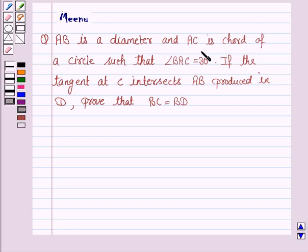It says AB is the diameter and AC is the chord of a circle such that angle BAC is 30 degrees. If the tangent at C intersects AB produced in D, prove that BC is equal to BD.